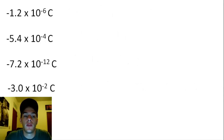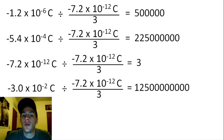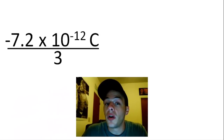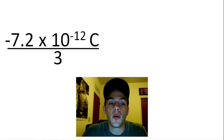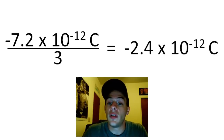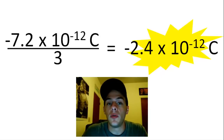Now we have to move on to a third of the smallest value, and we're going to keep doing this until we get the right answer. All of the answers here are whole numbers, so we don't have to go any further. This is indeed the charge of our mysterious particle — negative 7.2 times 10 to the negative 12 Coulombs divided by 3, which is negative 2.4 times 10 to the negative 12 Coulombs. So this is the answer to the question.